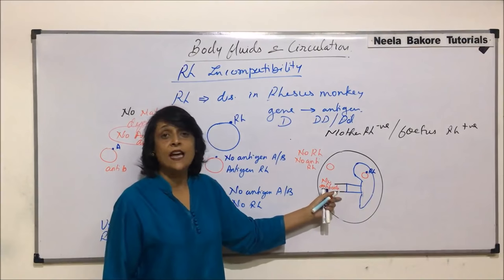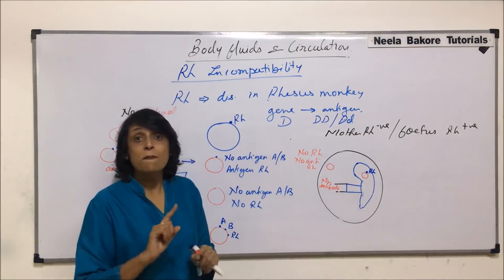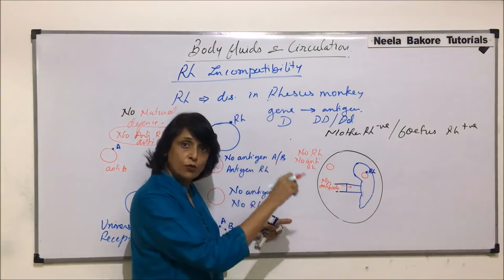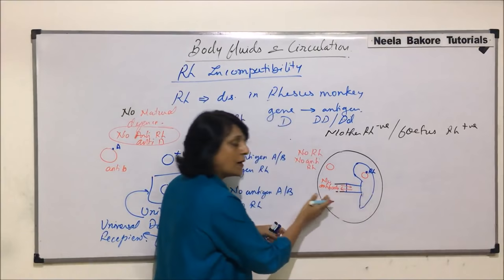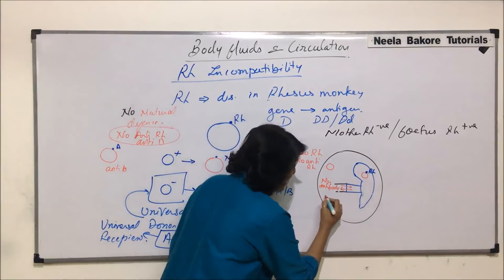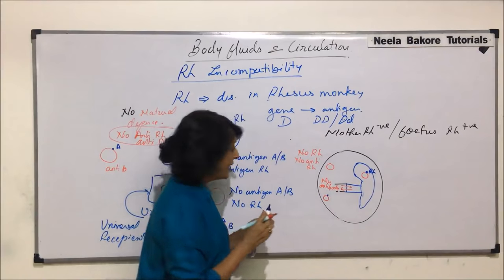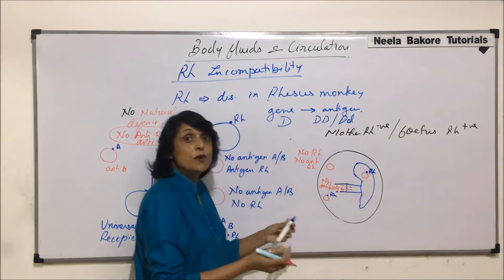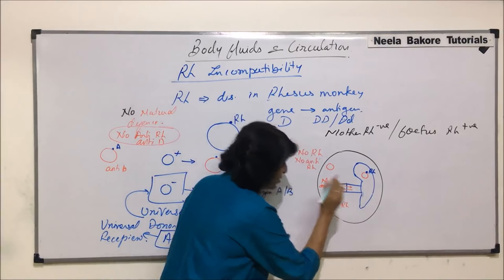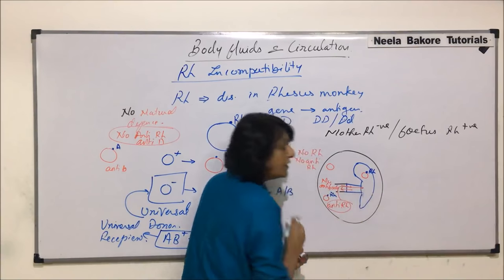But at the time of parturition, when the umbilical cord is cut, mixing of blood takes place. Some maternal blood goes into the fetal body and fetal blood comes into the mother's body. What has entered the mother's body are the RBCs of the fetus, and they are bringing RH. So now, the mother's body prepares anti-RH, and this anti-RH starts moving to the fetal body.